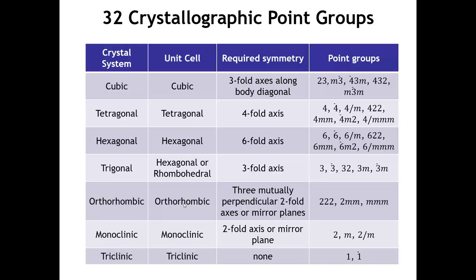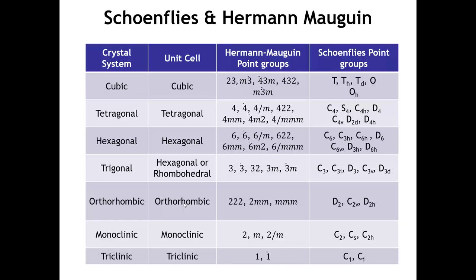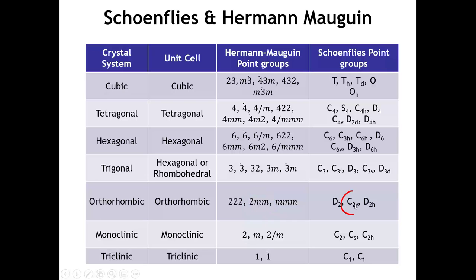Those familiar with molecular group theory are probably more familiar with the Schoenflies notation for point groups. The Hermann-Mauguin point group m3-bar m has exactly the same symmetry elements as the Oh point group in Schoenflies notation. The Hermann-Mauguin point group 2mm is the same as the Schoenflies point group C2v.